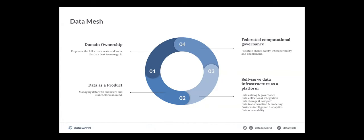Double-clicking on data mesh: there are four main tenets to solve the problem of monolithic technology and social structure in the enterprise. The first is domain ownership — empowering folks across the business to create and steward data, because they are the experts closest to it. This is really about democratizing and federating the management of data to different domains in your organization. Depending on your industry, domains might be your business units, functional areas, or products — there are a lot of different ways to think about domains.